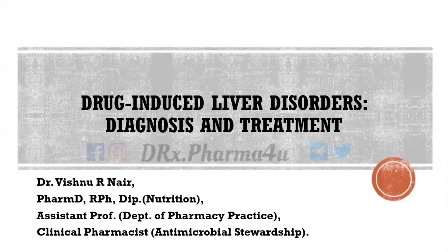In the previous two videos, we discussed about the different types of liver failure — why we see characteristic symptoms in individual liver disorders. For example, cerebral edema, abdominal pain, ascites, and kidney involvement as well. So all these things we discussed.